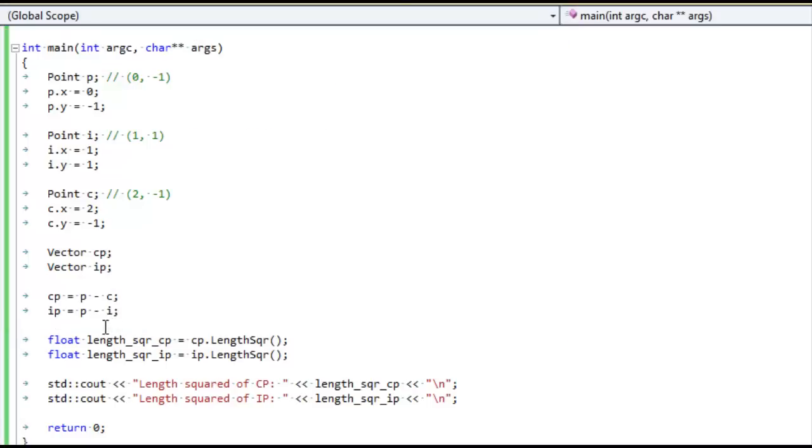What we're doing is, just like before, we are finding the vector CP. That is the vector from Clyde to Pac-Man. And the vector IP, the vector from Inky to Pac-Man. And then we're going to find the square of the length of both of those vectors. And then we're going to compare. We're going to print both of them out, so that we can compare and see which one is smaller.